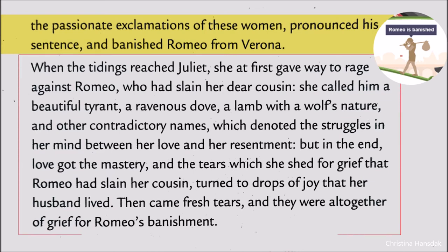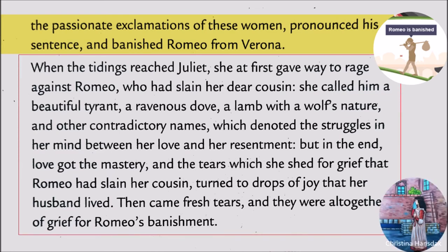When this news reached Juliet, she came to rage and called Romeo a beautiful tyrant, a ravenous dove, a lamb with a wolf's nature, and so forth — because her dear cousin Tybalt had been slain by Romeo. But slowly, the tears of grief changed into tears of joy, because after all, her husband was alive.